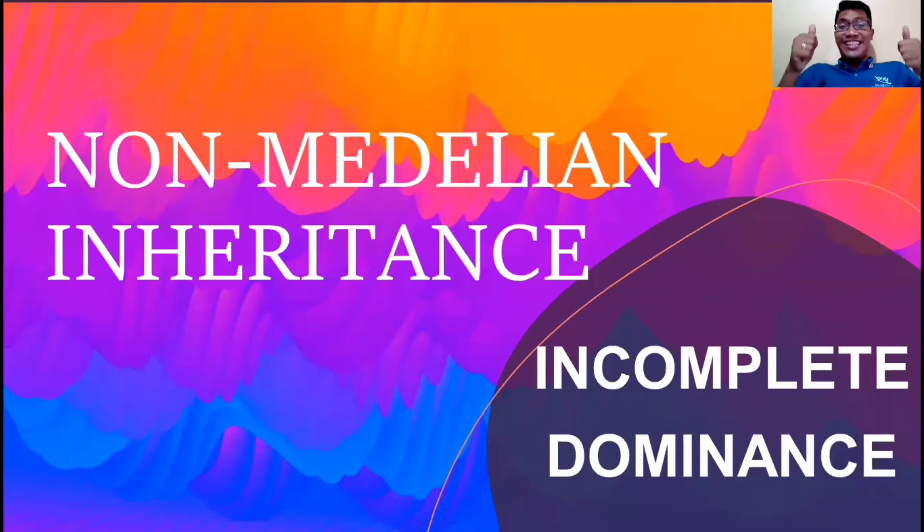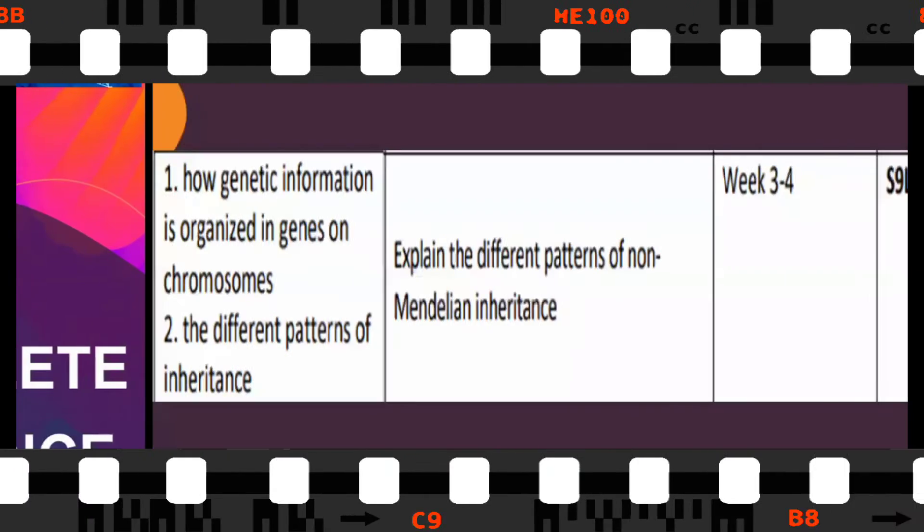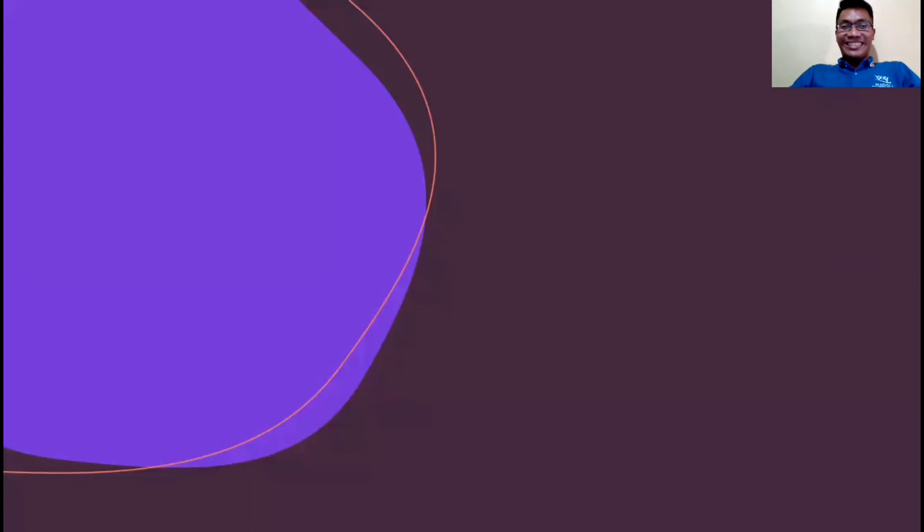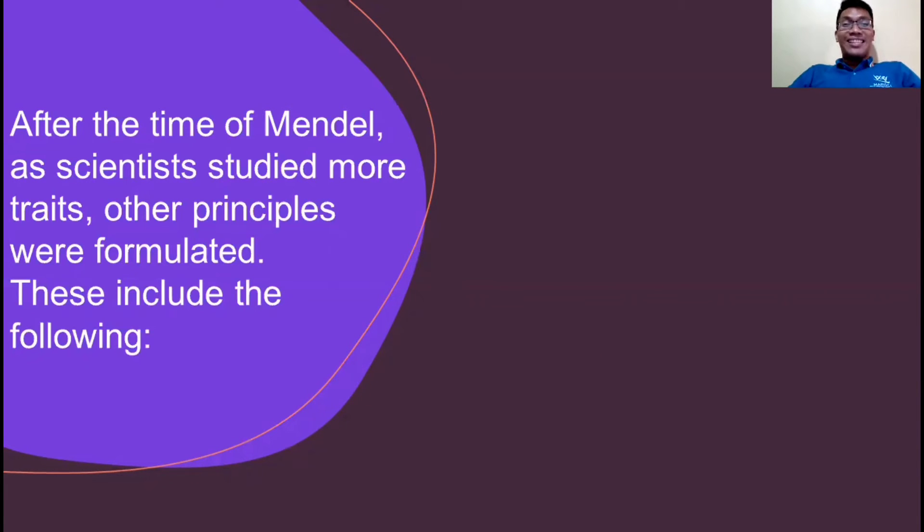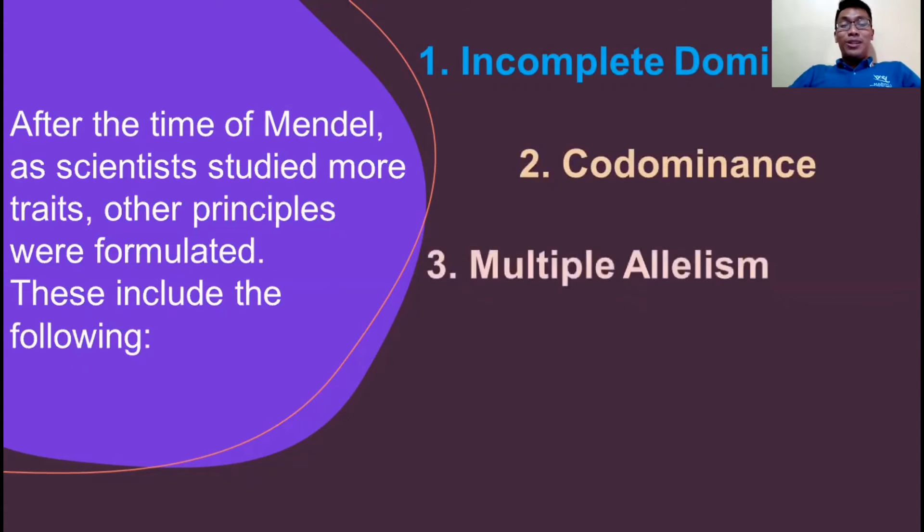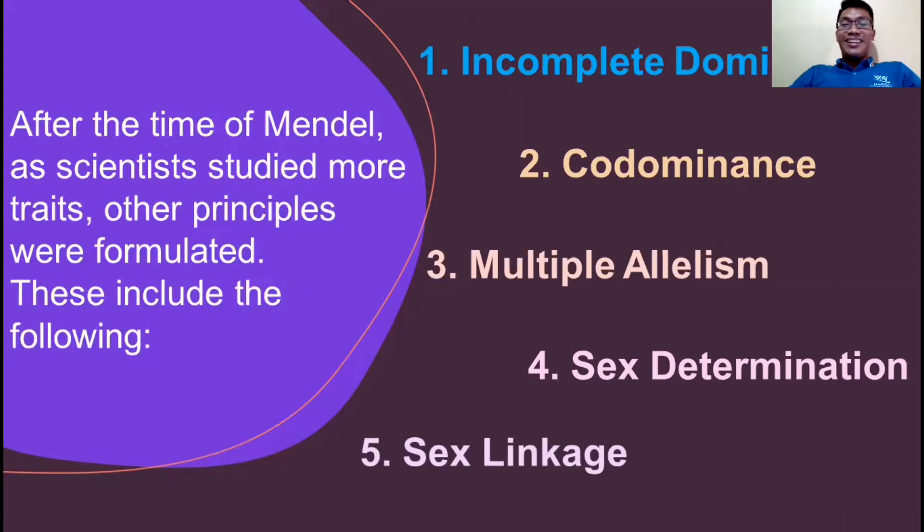Hello kiddos, or ESC here, and today we're going to discuss non-Mendelian inheritance focusing on incomplete dominance. This is for the grade 9. After the time of Mendel, as scientists studied more traits, other principles were formulated. This includes incomplete dominance, co-dominance, multiple allelism, sex determination, and sex linkage.